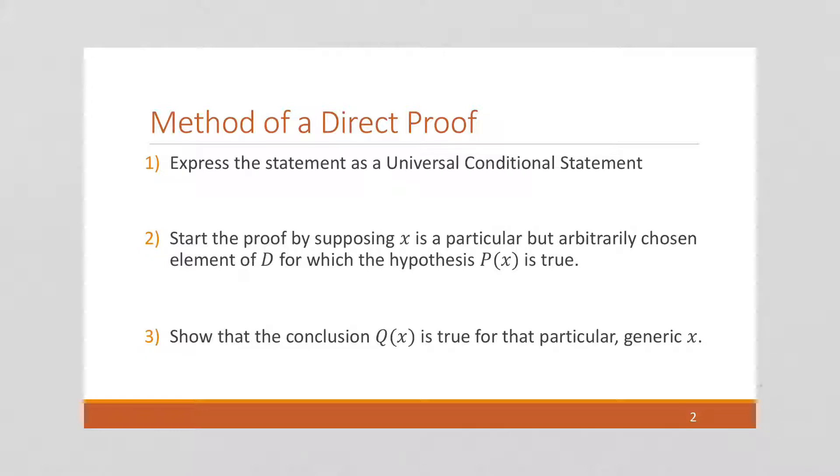So once again, let's recall how we do a direct proof. First, we express it as a universal conditional statement. So for all elements of our domain D, if P of X is true, then Q of X is true.